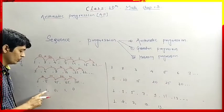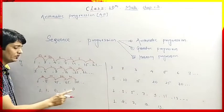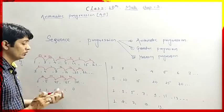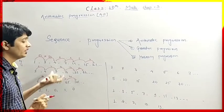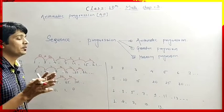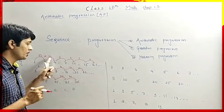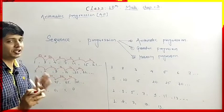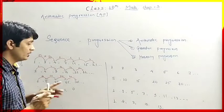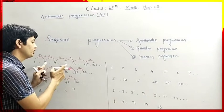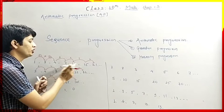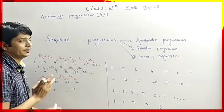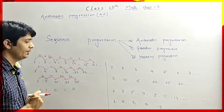Here we have the pattern 0, 1, 0, 1, 0, 1 — this follows a particular pattern and is a sequence. But the difference between two consecutive terms is not the same.